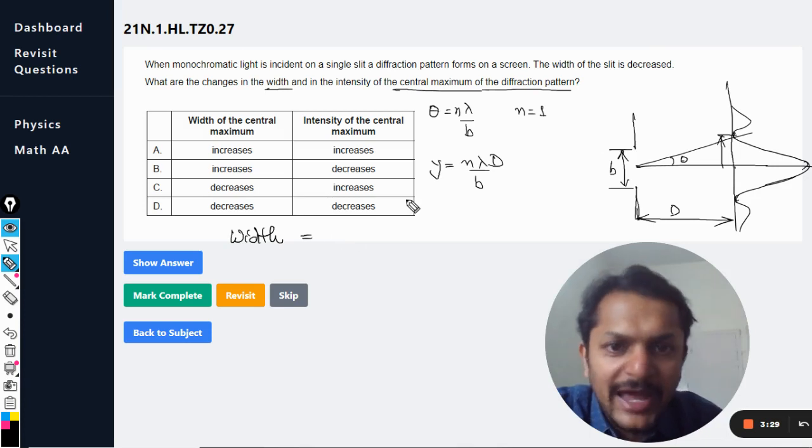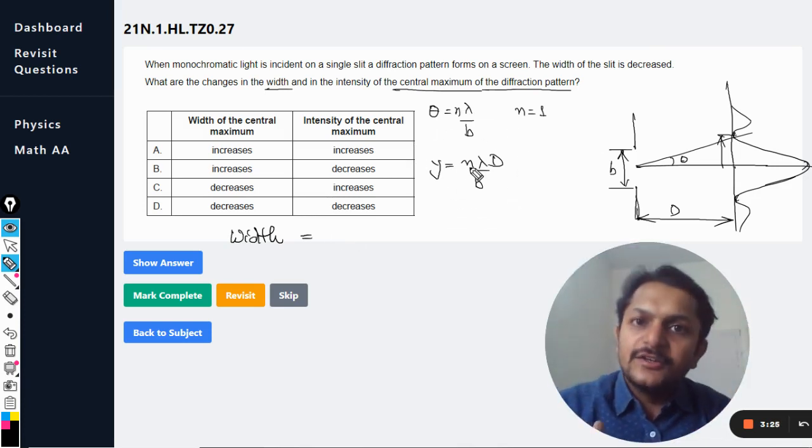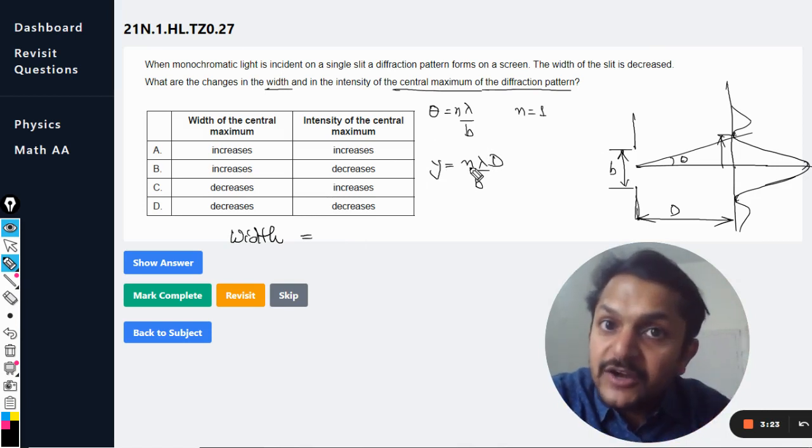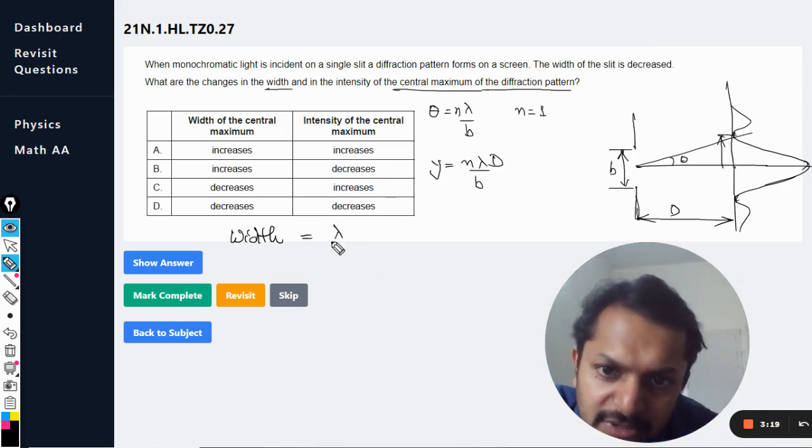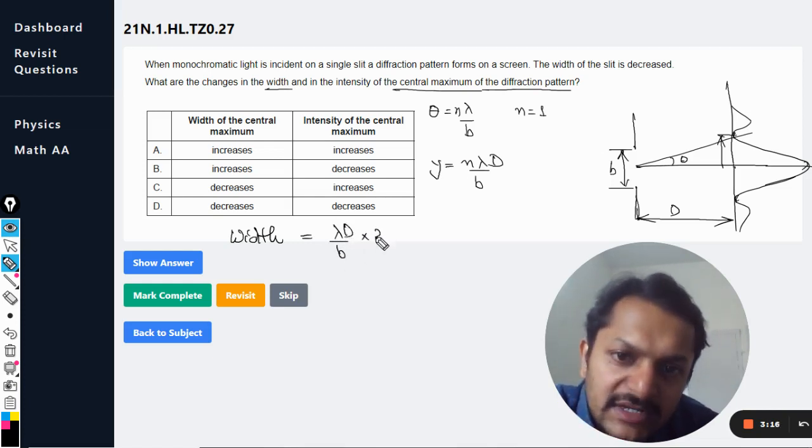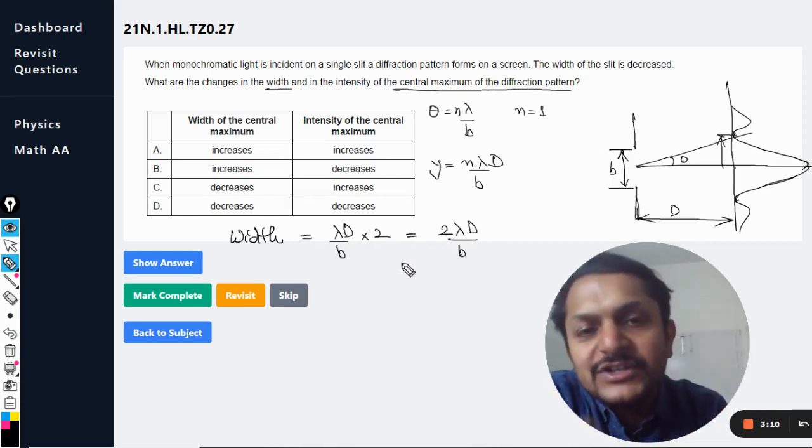So it will be lambda divided by b into capital D multiply by two. So you have this formula for you. So this is the width of the central maxima.